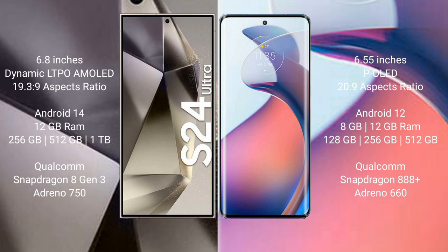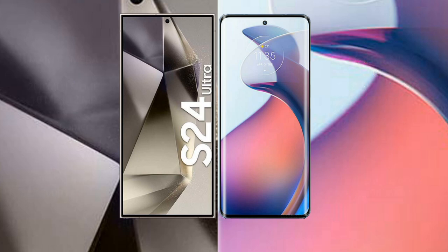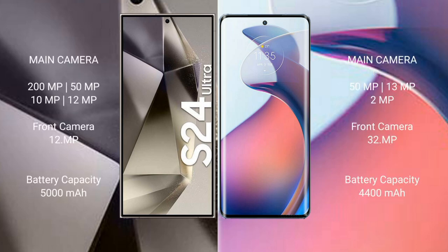Motorola Moto S30 Pro has 128GB, 256GB, or 512GB internal storage, with a Qualcomm Snapdragon 888 Plus processor and Adreno 660 GPU. Samsung Galaxy S24 Ultra has a quad rear camera setup: 200MP, 50MP, 10MP, and 12MP, with a 12MP front camera.